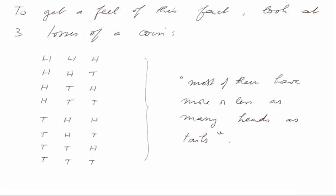To get a feel for this fact, look at three tosses of one coin. There are eight possible series of tosses: head-head-head, head-head-tail, head-tail-head, head-tail-head, tail-head-head, tail-head-tail, tail-tail-head, and tail-tail-tail. These are the eight possible series — this is the first toss, the second toss, and the third toss. As you can see, most of these series of three tosses have more or less as many heads as tails.